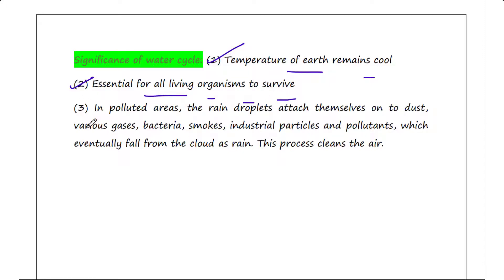In polluted areas, the rain droplets attach themselves onto dust, various gases, bacteria, smoke, industrial particles, and pollutants, which eventually fall from the cloud as rain. This process cleans the air.